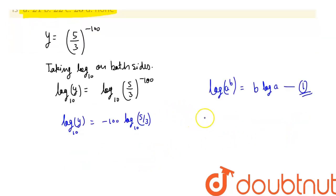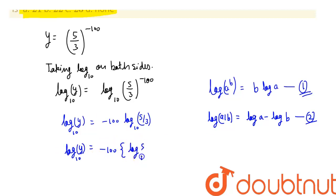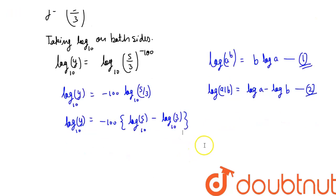Next, we use the logarithm quotient property: log(a/b) = log(a) − log(b). Applying this, we get log₁₀(y) = −100 × [log₁₀(5) − log₁₀(3)].